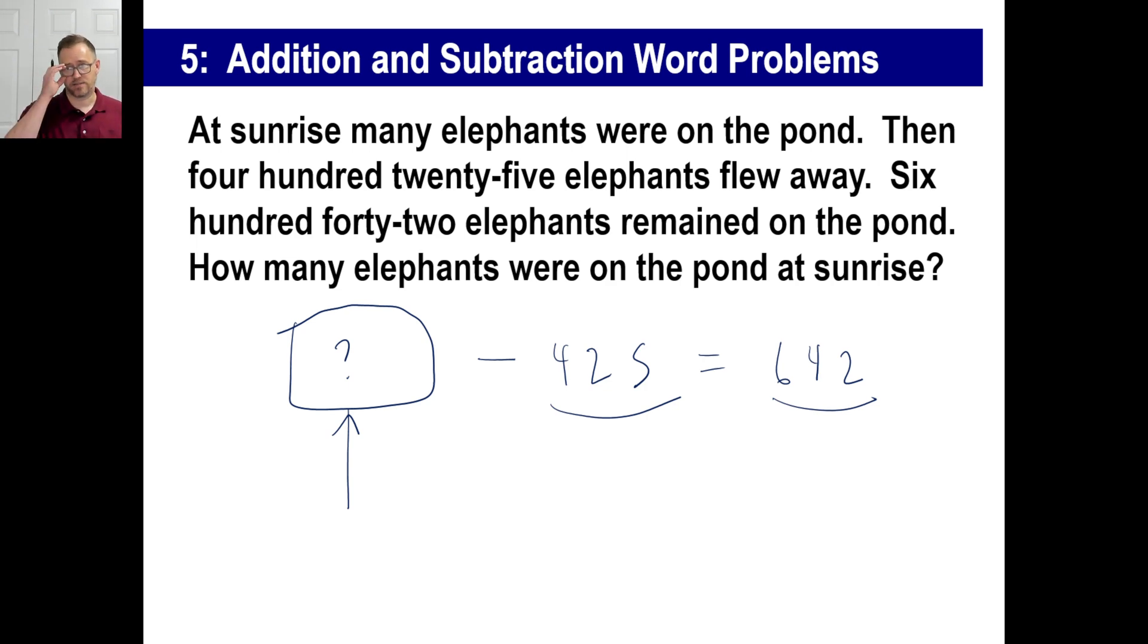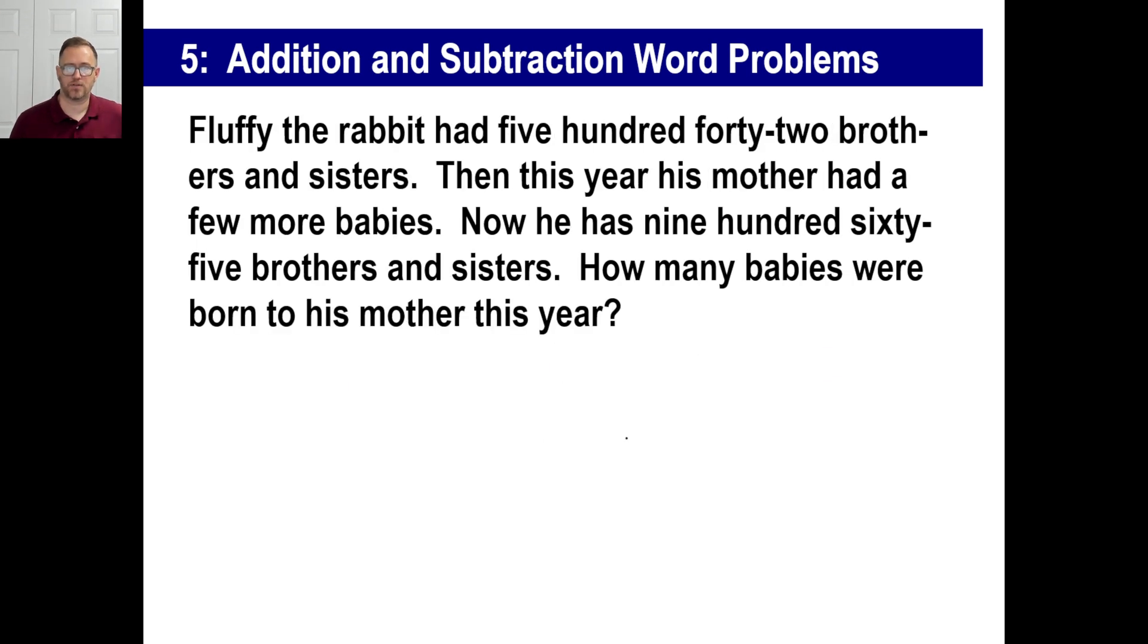To get this number, you can only use the numbers 425 and 642 to figure out what this number is by doing what operation? Addition is the operation. We're going to add those two numbers together, which means we get 1,067 elephants were on the pond before many of them flew away.